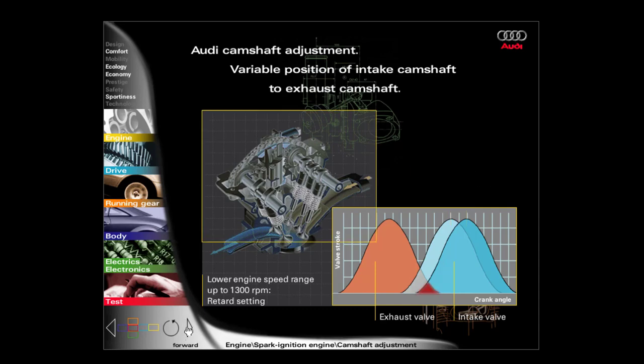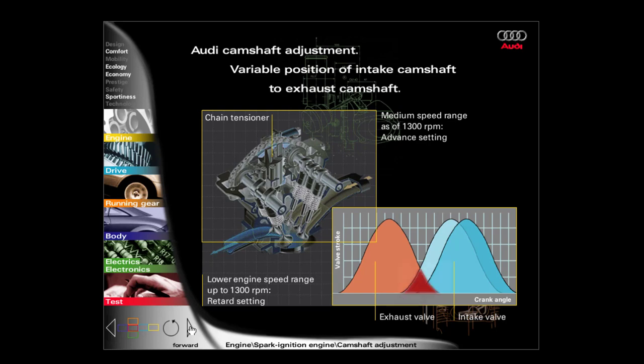In the lower engine speed range up to approximately 1300 revolutions per minute, the intake camshaft is set to retard. This prevents exhaust gas reflux on the intake side and therefore ensures smooth idling. In the medium engine speed range from approximately 1300 revolutions per minute, the engine management system rotates the intake camshaft to its advanced setting with the aid of the chain tensioner. During intake, exhaust gases may flow into the intake port and be drawn in along with the fresh gases. This reduces the temperature of the combustion process and therefore reduces the percentage of nitrogen oxides. During compression, no further fresh gases are able to flow back into the inlet manifold, which improves torque.